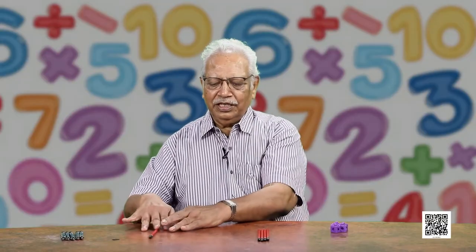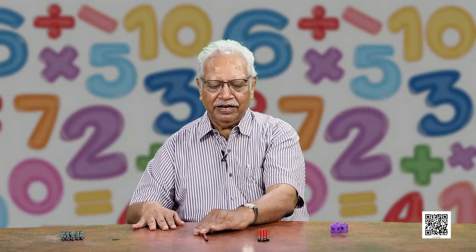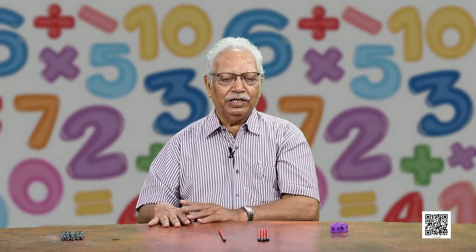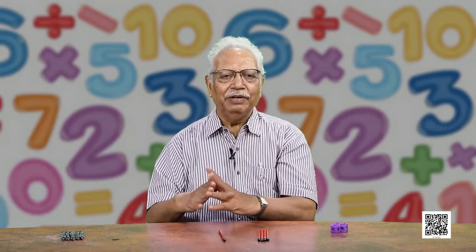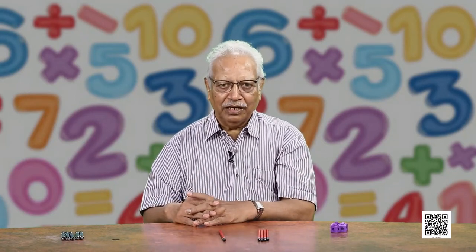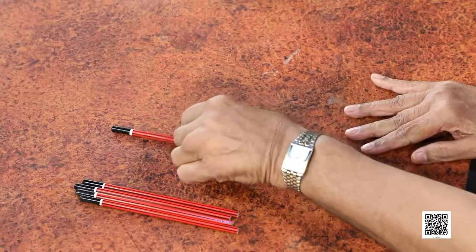And similarly, we can add another pencil here. 4 and 1 — how many do they make? 4 and 1 make 5 again.